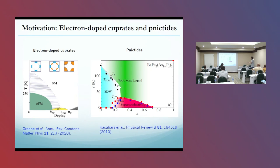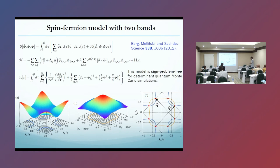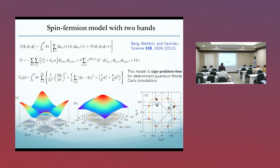For the nickelides, we also get a spin-density wave phase, and close to the spin-density wave phase we have a non-Fermi-liquid regime and also the superconducting dome for these materials. We are going to use the spin-fermion model with two bands. This model is actually sign-problem free for quantum Monte Carlo simulations — this was first demonstrated by Berg, Metlitsky, and Sachdev in their Science paper.